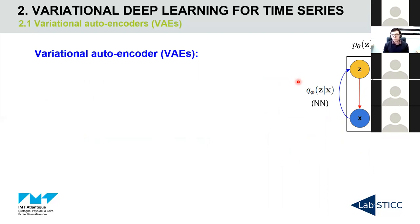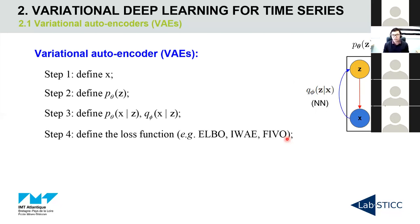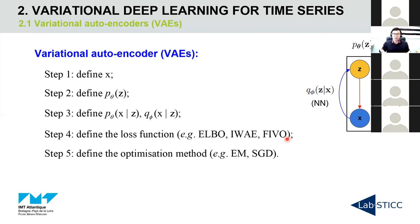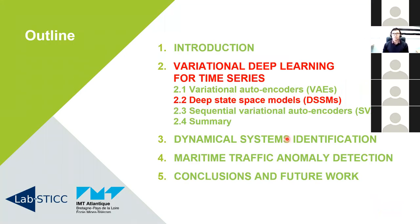To build a variational autoencoder: first, define the observed variable; based on domain expertise, define the prior on the latent variable; then define the emission and inference distributions; the next step is to define a loss function; and finally, choose a suitable optimization method. Variational autoencoders are a powerful model. However, they were originally designed for static data such as images. In the following session, I will present how to apply this idea to time series.